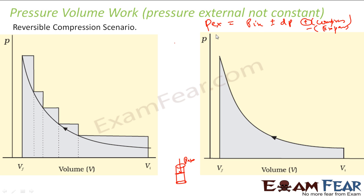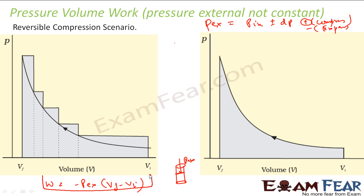Since the pressure is always changing, we can break this into small small scenarios. We find P·ΔV for one step, then change P and find it again, and so on. The formula we got was: work = −P_external × ΔV = −P_external × (V_final − V_initial).